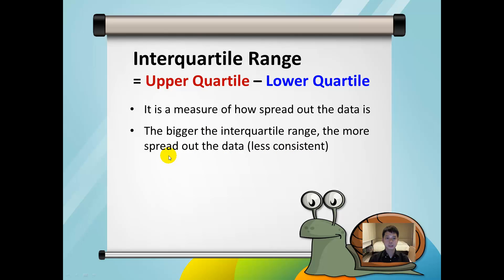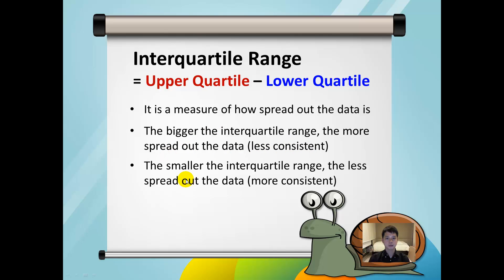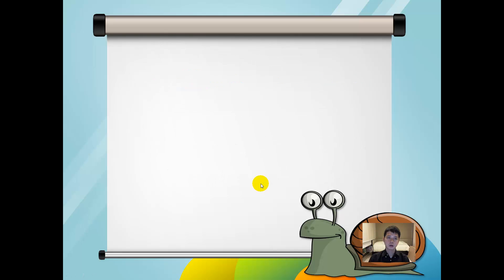Vice versa, if the interquartile range is small, it means that the data is less spread out, and hence it is more consistent. Let us look at some examples on finding the quartiles of discrete data.